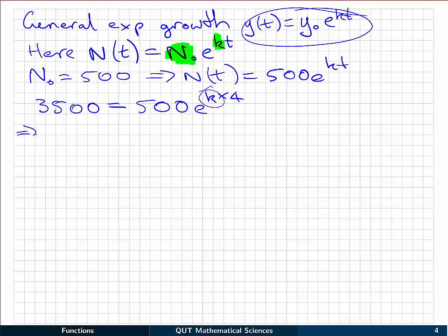So we can move through 3500 over 500, or 7, must be equal to e to the 4k. And then we can take the natural log of both sides, or the e-based log. ln 7 must be equal to 4k, and finally then, k is equal to ln 7 over 4.